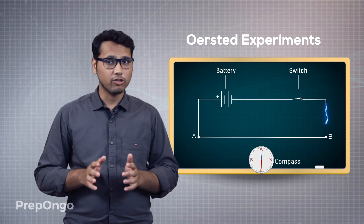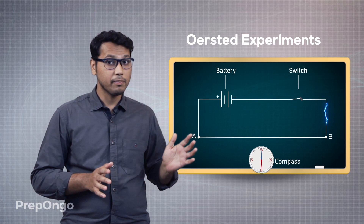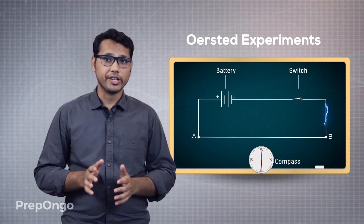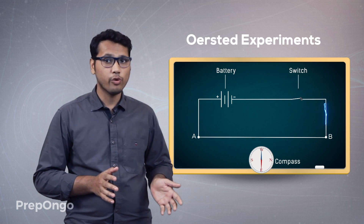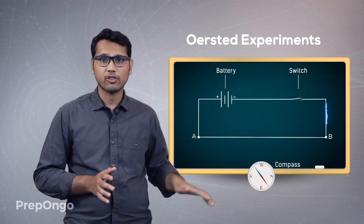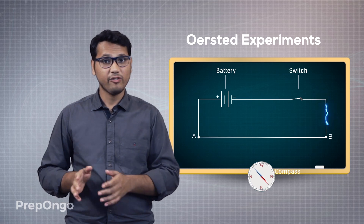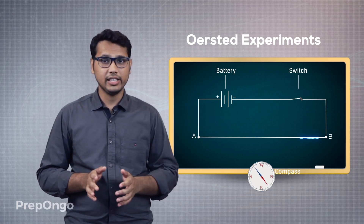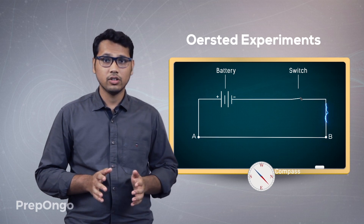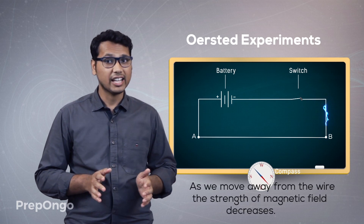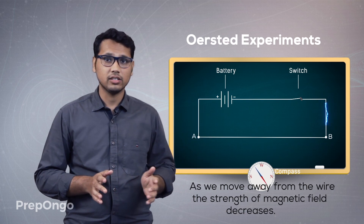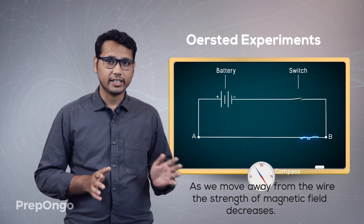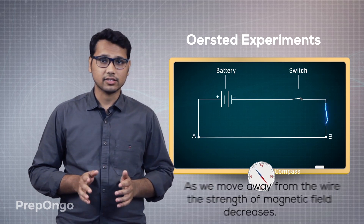Now he had to find out whether the magnetic field also depends on the position of the point. He moved the compass away from the electric wire and found that the deflection decreased from its previous value. He concluded that as he moves away from the wire, the strength of the magnetic field produced by that electric current decreases.